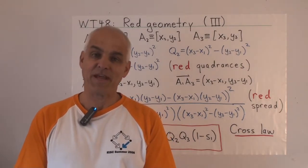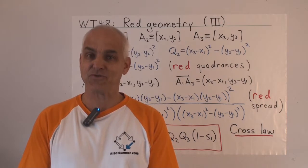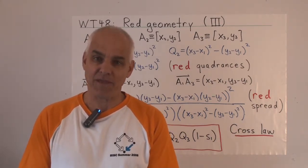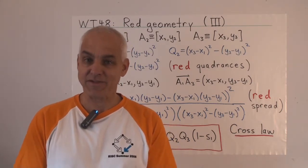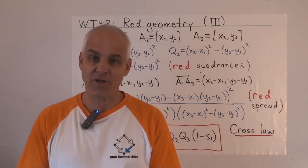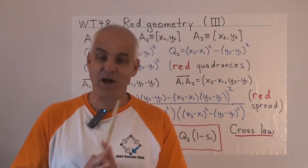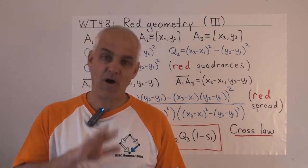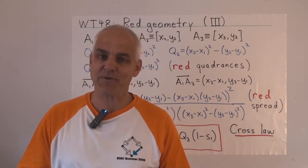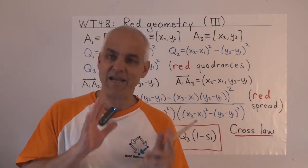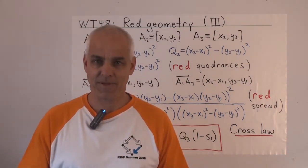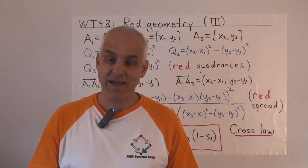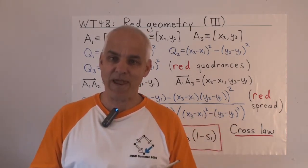Hi, I'm Norman Wildberger and today we're going to have a look at the laws of trigonometry in red geometry. The surprise is going to be that the laws of trigonometry in this new relativistic geometry are exactly the same as the laws of trigonometry that we're used to in ordinary Euclidean geometry. So our five main laws of trigonometry are going to hold exactly unchanged in this new setting. That's a great confirmation of the validity of rational trigonometry and also extends its domain considerably.